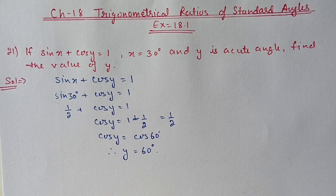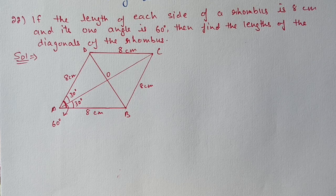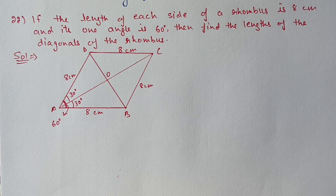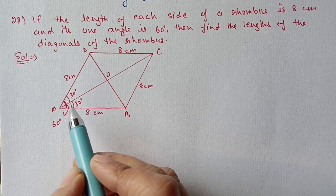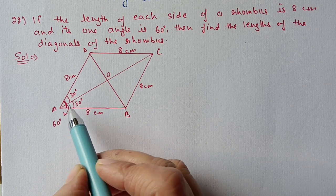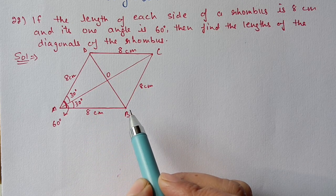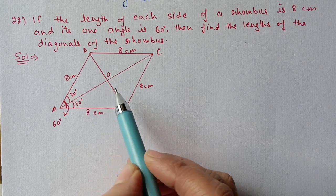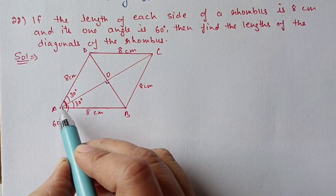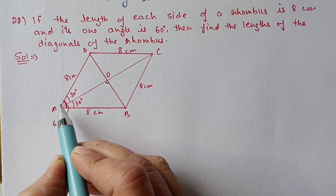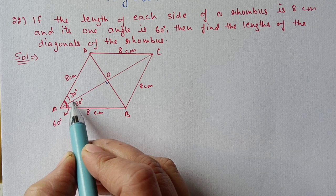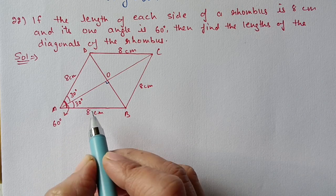Question 22: if the length of each side of a rhombus is 8 centimeters and its one angle is 60 degrees, find the length of its diagonals. We will make a figure of the rhombus — each side is 8 cm and one angle is 60 degrees. As we know, diagonals of a rhombus bisect each other at 90 degrees, so this angle will be 90 degrees and the 60-degree vertex angle is bisected into 30 degrees on each side.